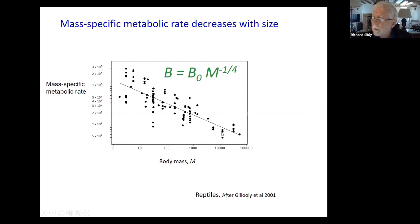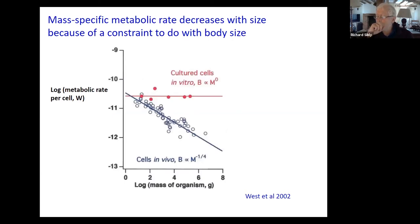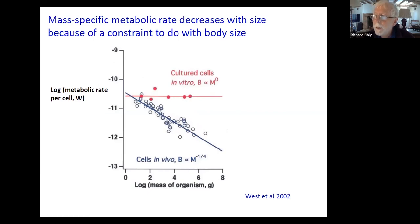The mass-specific metabolic rate is lower for big animals than for small animals. One of the most important pieces of evidence that all this depends on body size is a remarkable study in which you take cells out of the body. In vitro, the cells from the big animals are just as efficient — the metabolic rate per cell is just the same as the small animals. To me this is very powerful empirical evidence that there is a constraint just as a result of body size: put those cells back in the organism, and their efficiency has gone way down.